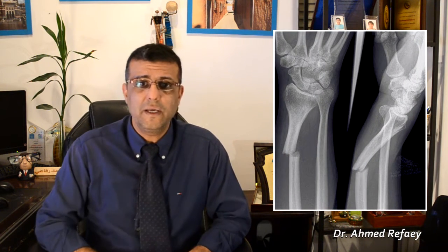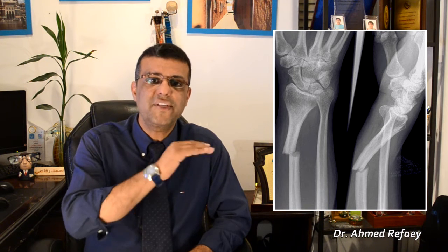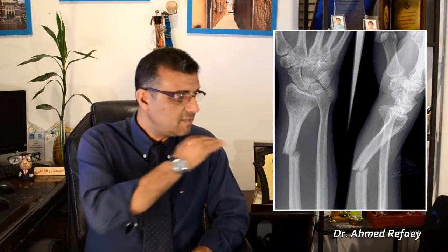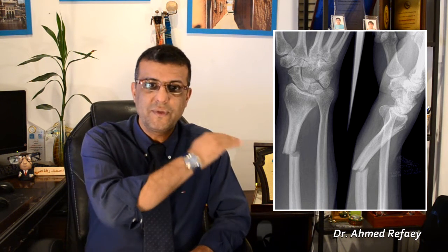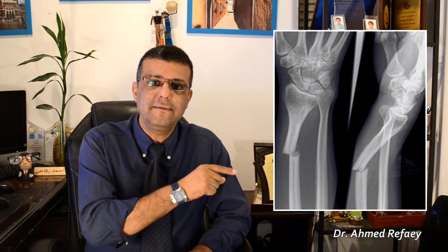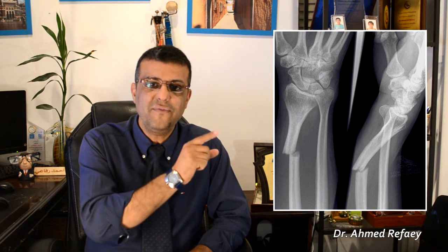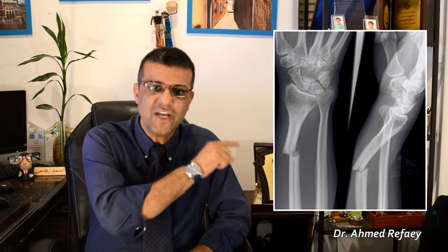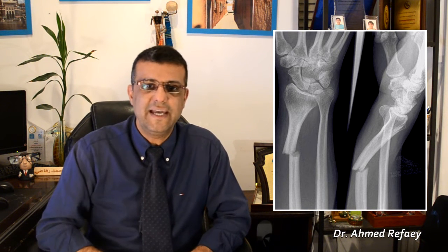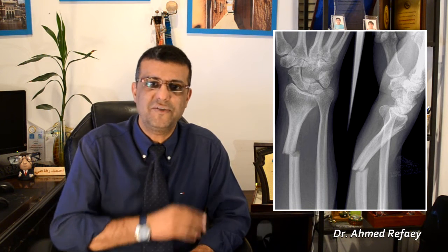Starting with case number one. This is a complete fracture, meaning it involves both sides of the cortex. It is transverse and simple, meaning only two bone fragments. This is a complete, transverse, simple fracture involving the shaft of the left radius — extraarticular because it is away from the joint.